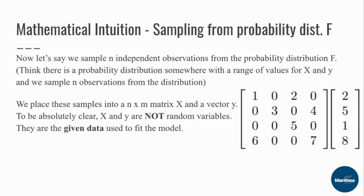This is the data set you get when you're trying to do a linear regression modeling problem. This data comes from a larger probability distribution function, and from that we are picking values of x and y to estimate theta. We have x and we have y, but we don't have theta — and theta is what we want to find.